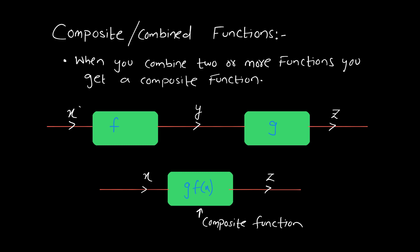A composite or combined function is formed when you combine two or more functions. Observe that the value of x is the input for function f. Function f takes x and gives output y, and if that same output is then inserted into function g, function g generates a new output z. As you can see, this is a two-step process.